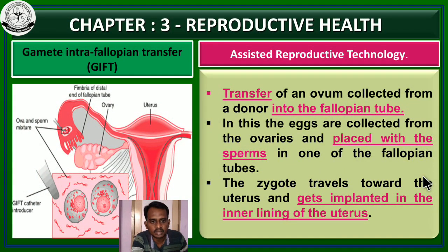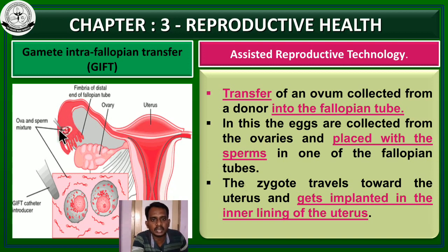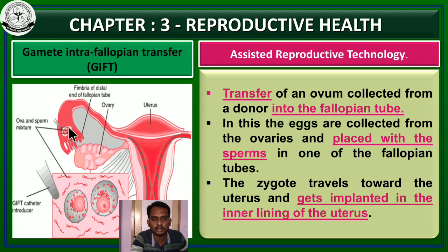Next, we move on to another technique — gamete intra-fallopian transfer (GIFT). Gamete means egg and sperm. In this technique, an ovum collected from the donor is transferred into the fallopian tube. The eggs are collected from the ovaries and placed with sperm in one of the fallopian tubes. In case of intrauterine insemination, the sperm alone is introduced into the uterus, but in gamete intra-fallopian transfer, both egg and sperm are placed in one of the fallopian tubes. This facilitates natural fertilization.